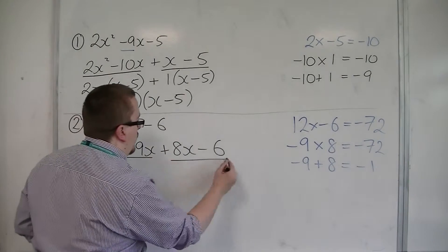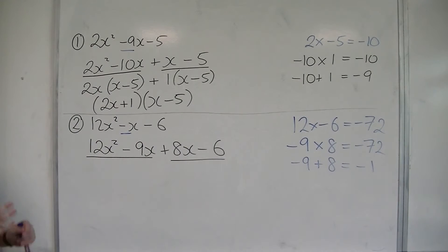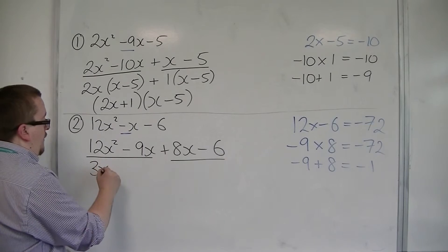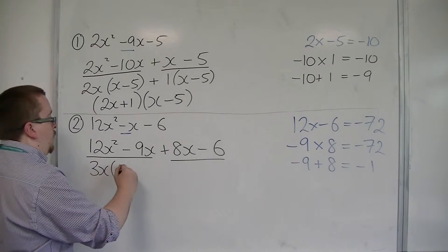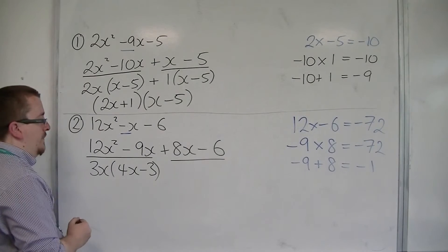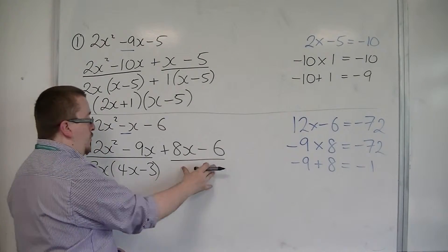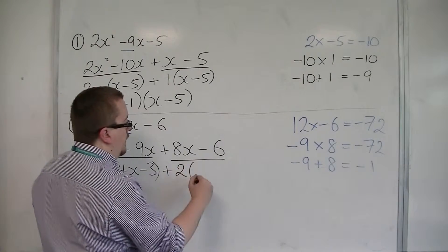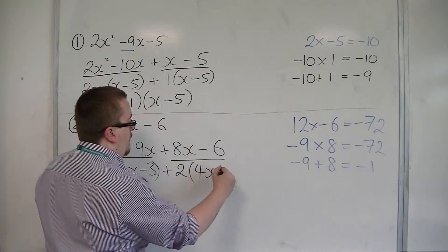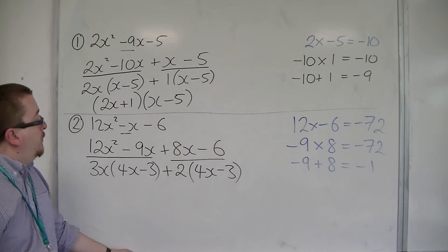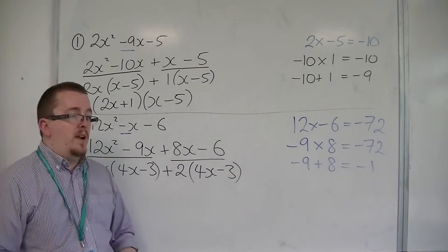We then look at the two halves and factorise. So this half, I would have 3x outside of the bracket and 4x minus 3 inside the bracket. And over here, I would have to bring out 2 and have 4x minus 3 inside the bracket. Now I know things are going well because I've got exactly the same bracket there.